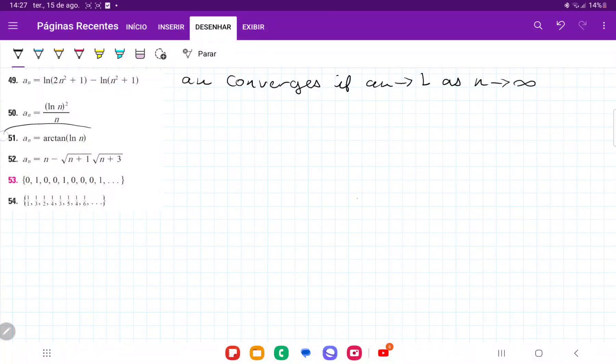So for number 51, we want to see if the sequence over here converges. Sequence a_n converges if a_n tends to a defined limit as n approaches infinity. So what we're going to do here is we're going to take the limit as n approaches infinity of arctan of ln of n.